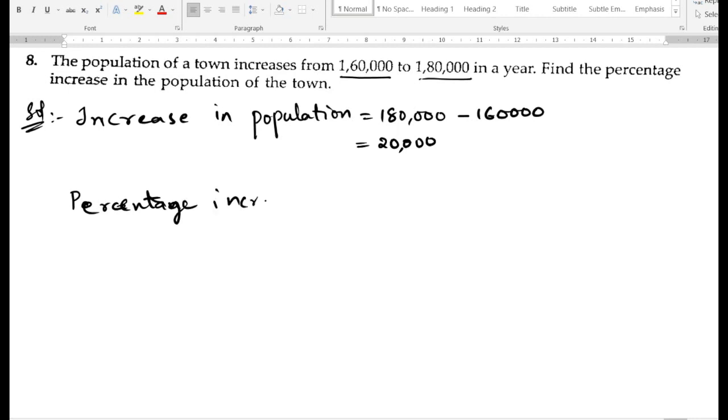Percentage increase is equal to, for that we need to write increase in population by original population times 100 for percentage.